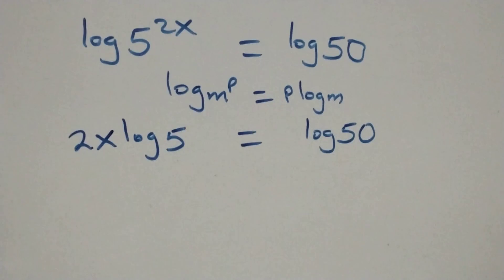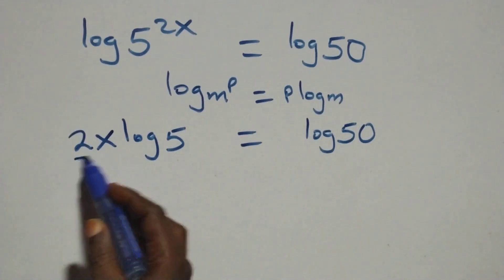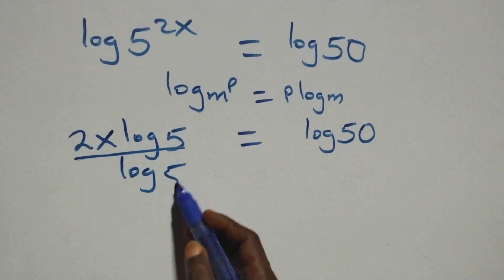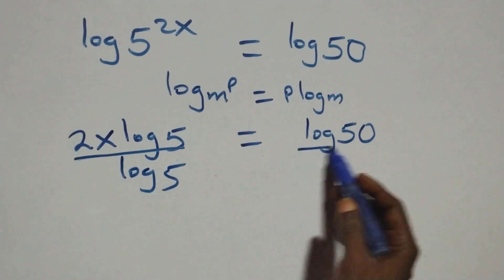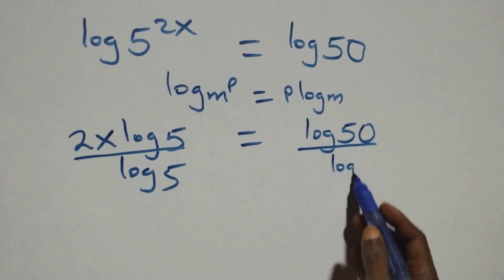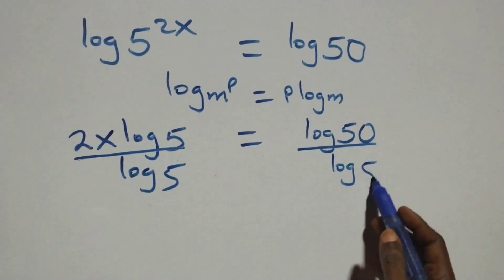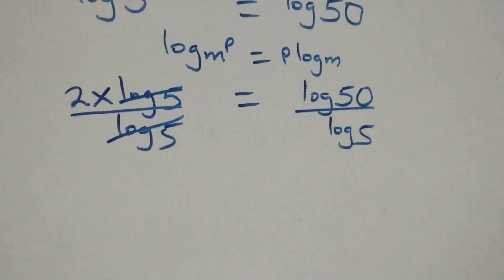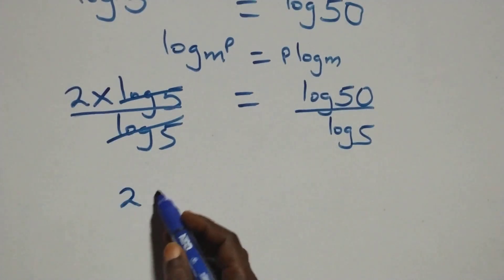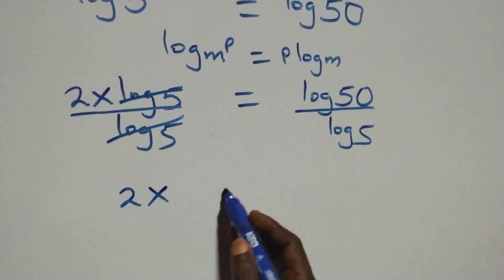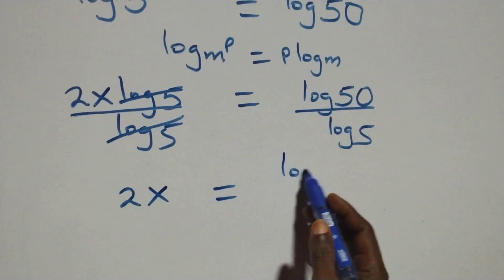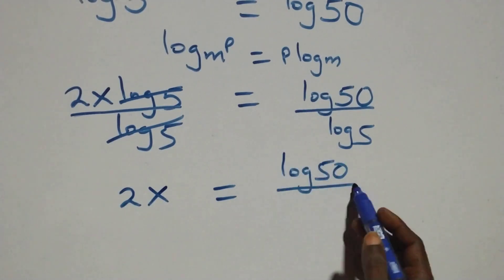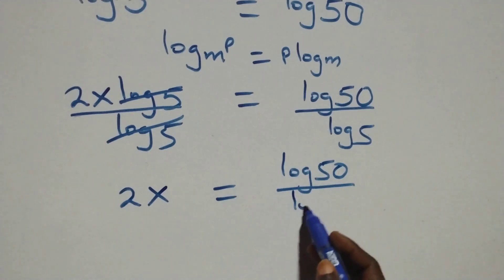Then here we divide both sides by log 5. We divide this side by log 5 and also divide the other side by log 5, giving us 2x equals log 50 over log 5.